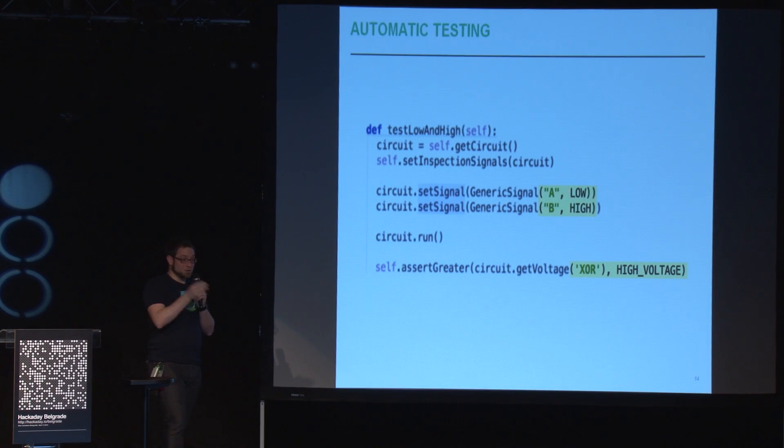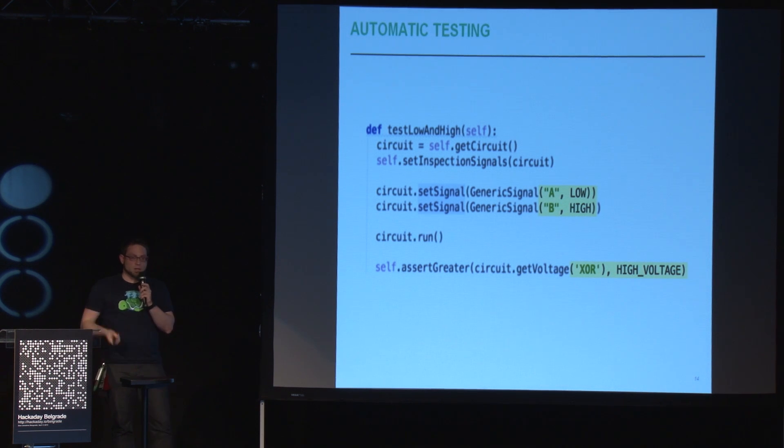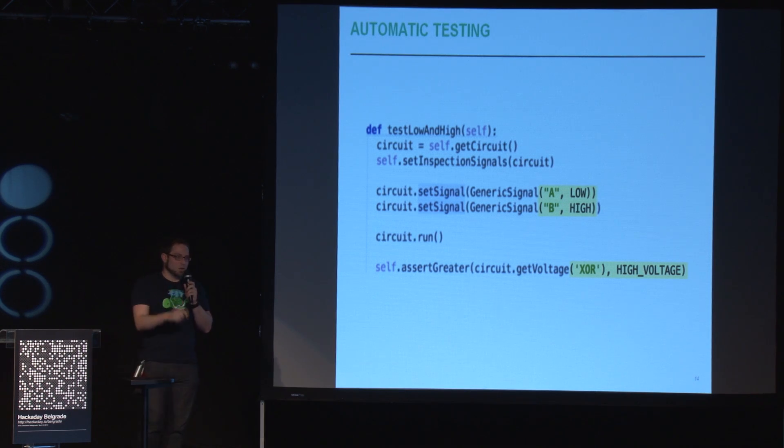Here we have a test for an XOR: if A is low and B is high, then the output should be high. This takes an Eagle schematic as input, creates a SPICE simulation, runs the simulation for a while, and then checks the output. This can be done for all the gates. Single gates are easy — an AND has two inputs, one output; that's basically four combinations to test. Then you add a test that it doesn't draw too much current, so there's no short circuit, and you can be fairly certain the AND itself will work.